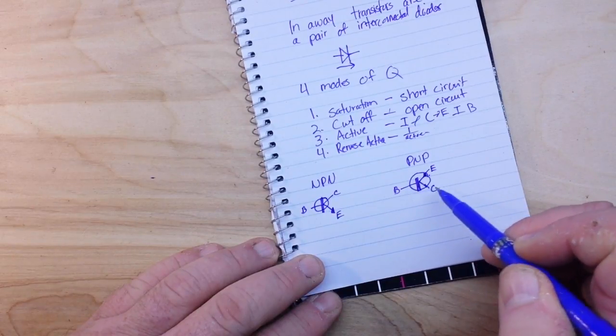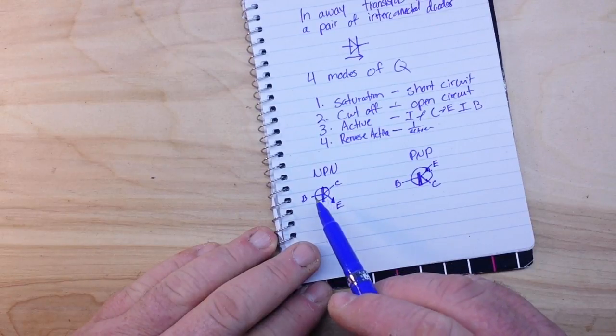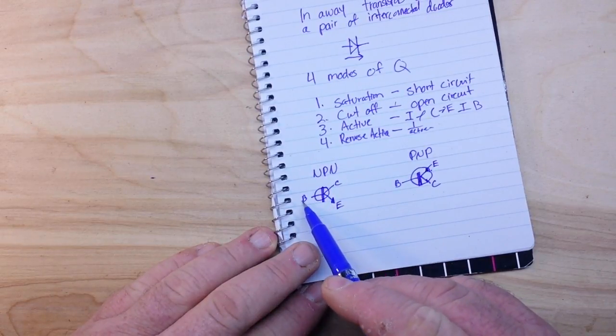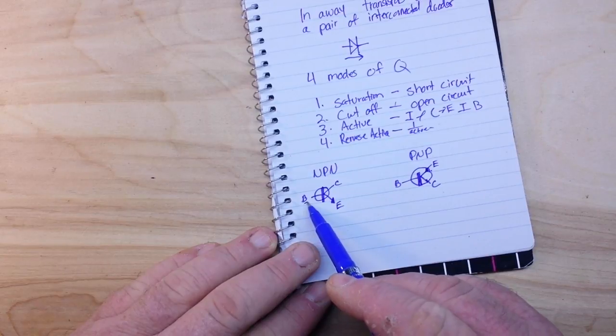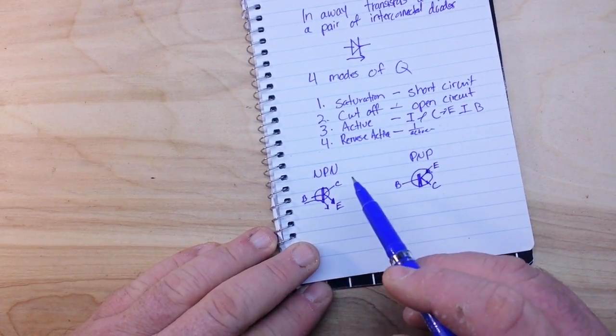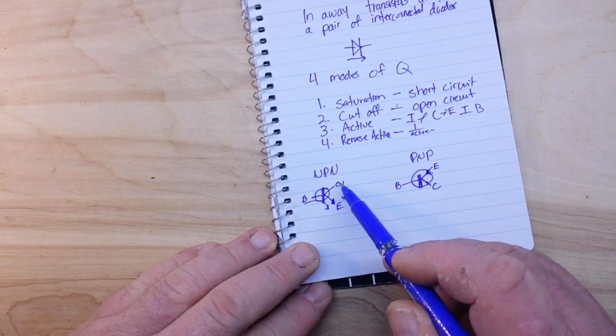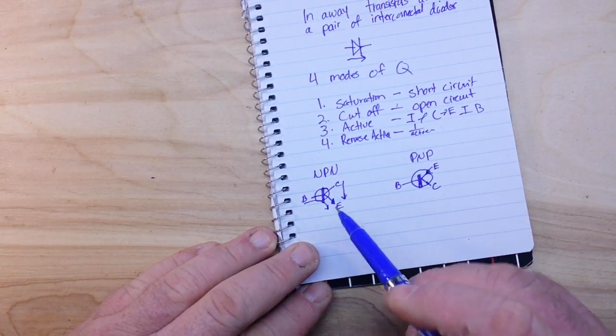So when we're doing an NPN circuit, our current flows - a small current flows through the base-emitter junction, which allows a larger current to flow through the collector-emitter junction.